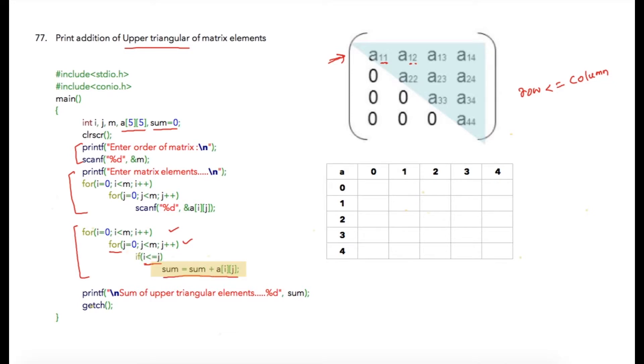Finally, when all elements are iterated, I'm printing sum of upper triangular elements is percent d, and percent d will be replaced by the final value of sum.